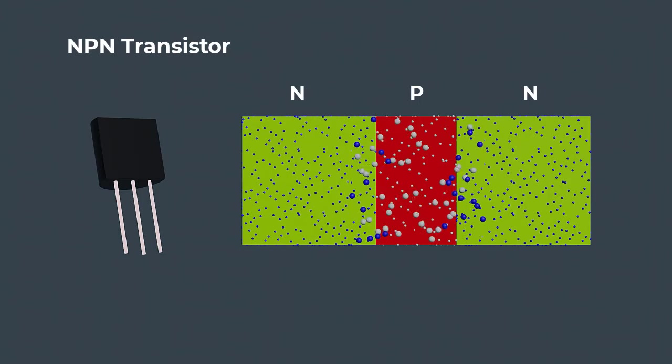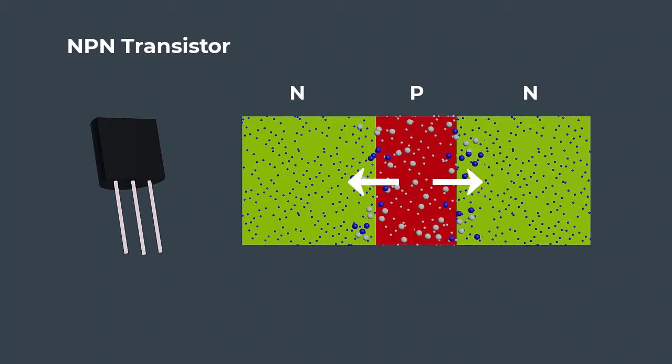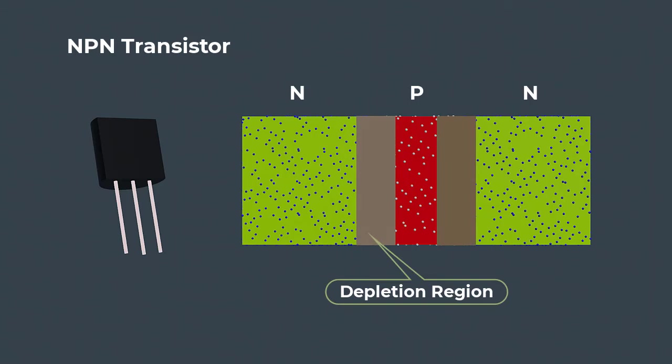Similarly, holes migrate from base to the emitter and collector region. This migration of charges creates a charge-free zone, called depletion region.